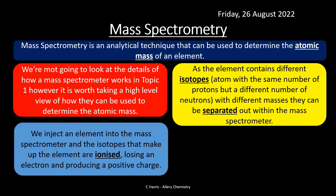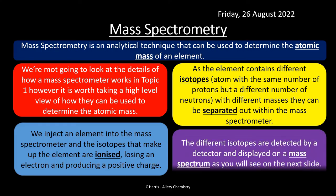It's a bit like a bike versus a heavy goods vehicle going around a corner — the bike being light can get around the corner neatly, but a heavy wagon will swing out and take longer to get around that bend. It's the same with these molecules in mass spectrometry. The different isotopes are detected by a detector and displayed on a mass spectrum.